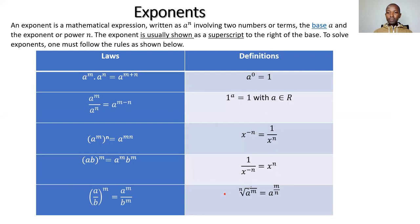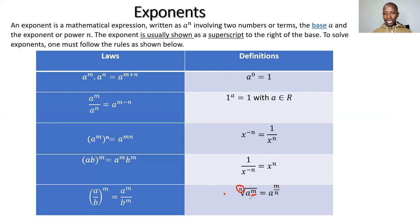The last definition covers radicals: the nth root of 'a to the power m' equals 'a to the power m over n'. The inside power m goes over the outside power n. So it becomes 'a to the power m over n'. Now we're going to use these definitions and laws to do a number of questions together.